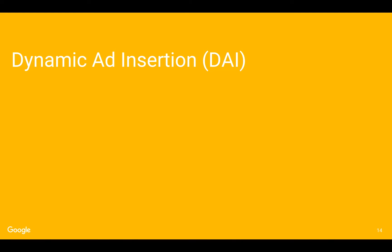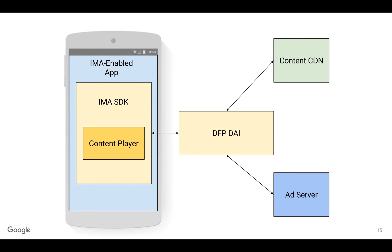We're doing that with something new we're calling Dynamic Ad Insertion, or DAI for short. With Dynamic Ad Insertion, we take another server and put it in between the content CDN, the ad server, and your app or web page. When it's time to play a video, DAI is going to reach out to the content CDN and the ad server, take your content video and your ad video, and merge them together to create one seamless video stream that gets sent down to your app. The IMA SDK will wrap your content player — so there's less work for you to do — and can automatically take this video stream and insert it into your content player. You have one constant stream of video with both ads and content.